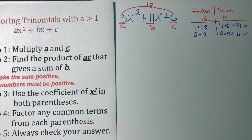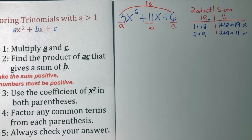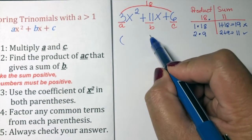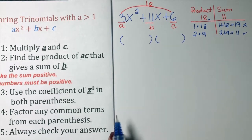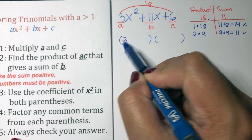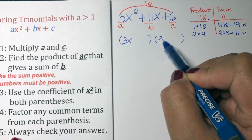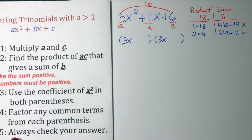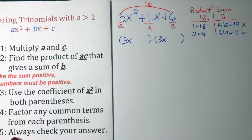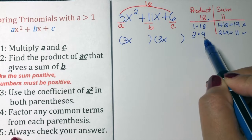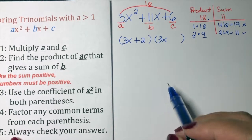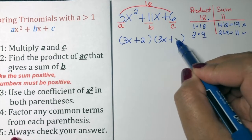The next step is we need to use the coefficient of x squared in both parentheses. So, let's make parentheses here. The coefficient of x squared is 3, so this will be 3x and 3x. The two numbers in the binomial will be positive 2 and positive 9, so we write plus 2 and plus 9.